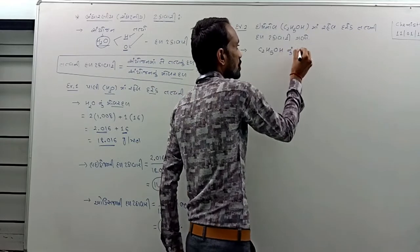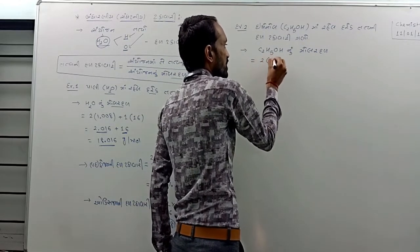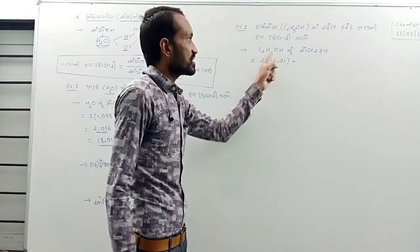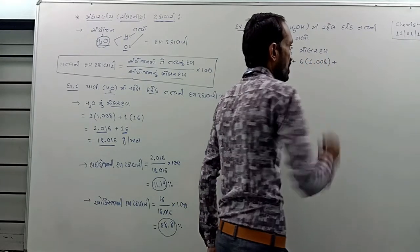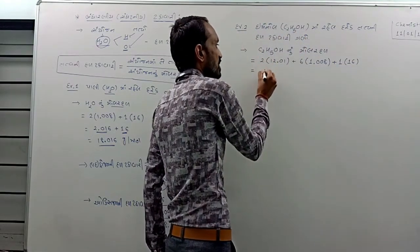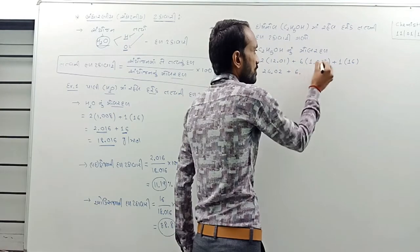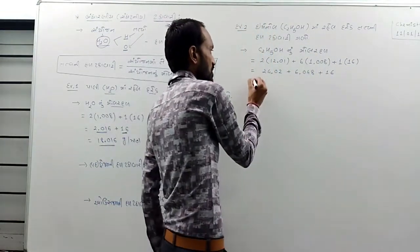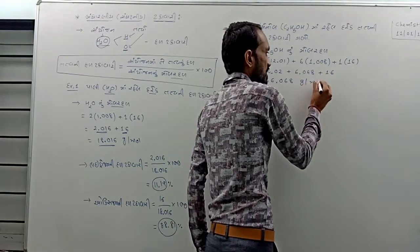Ethanol molar mass is equal to: taking atomic weights and multiplying — so that is 24.02 plus 6.048 plus oxygen, giving 46.08 grams per mol. Permanent result.